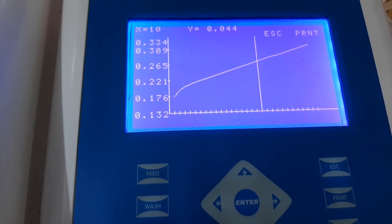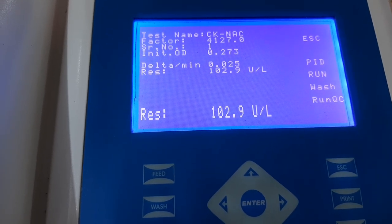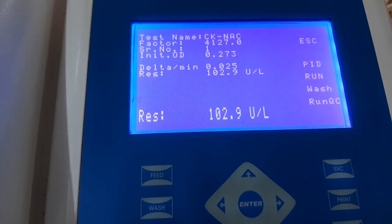After the read time is over, the instrument will automatically calculate the delta absorbance per minute and multiply by the factor to give the result.